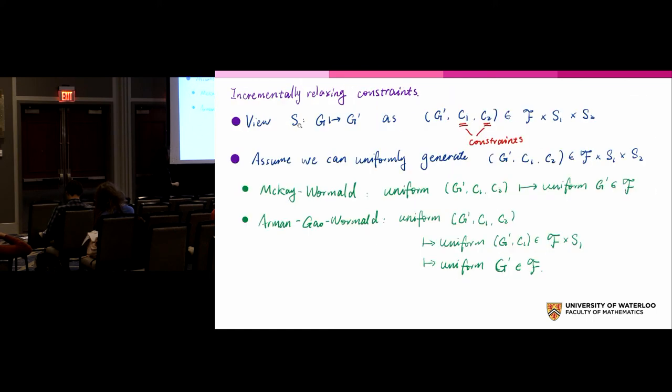That's the first step, just another interpretation of the switching. Now I would view this switching as g prime, c1, c2 are constraints. c1 says I must have those two pairs existing: 5 is paired to 1, 3 is paired to 7. c2 says additional to c1, I must have 6 paired to 2, 4 paired to 8. Previously, the algorithm without any b rejection part generates this constraint g prime uniformly at random.